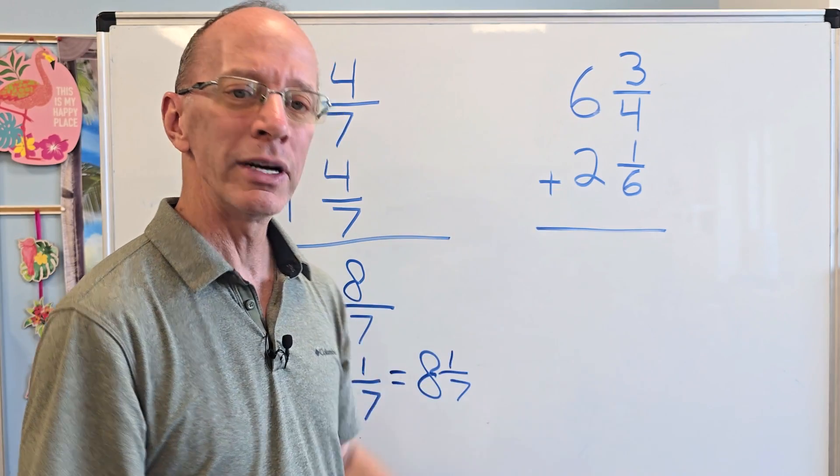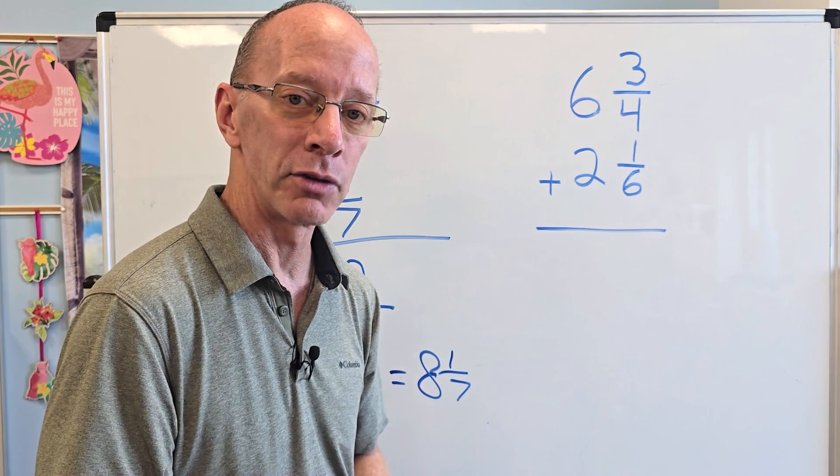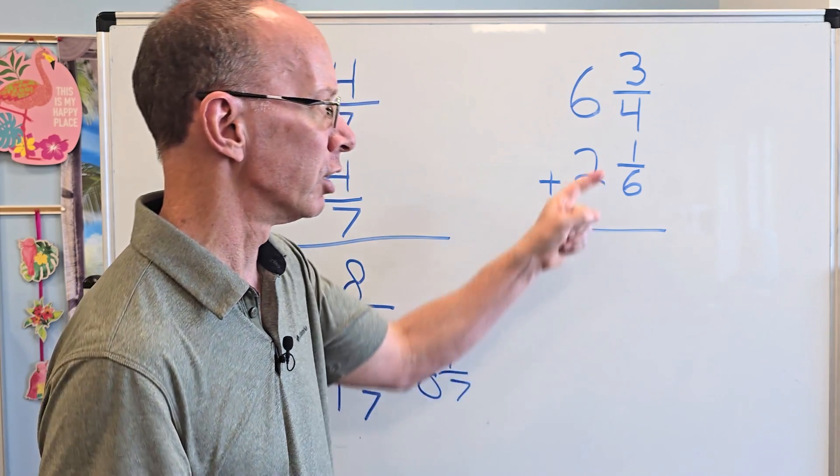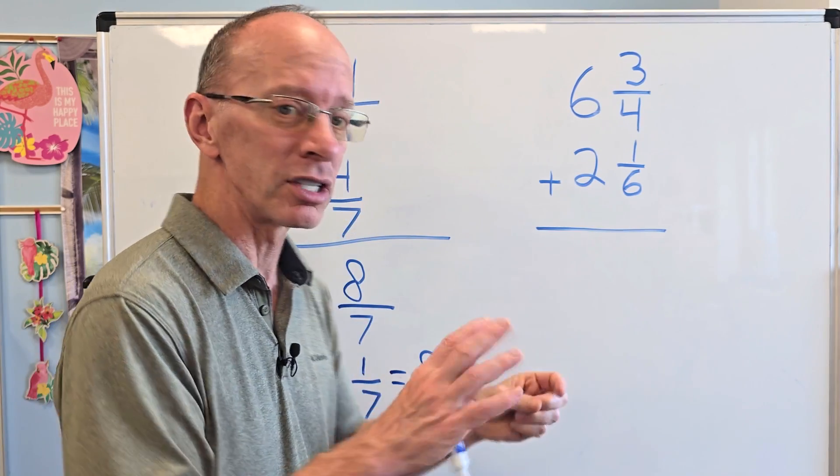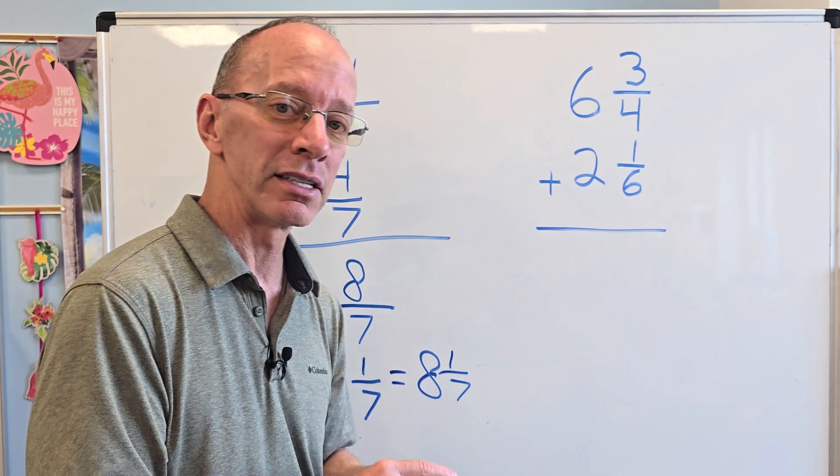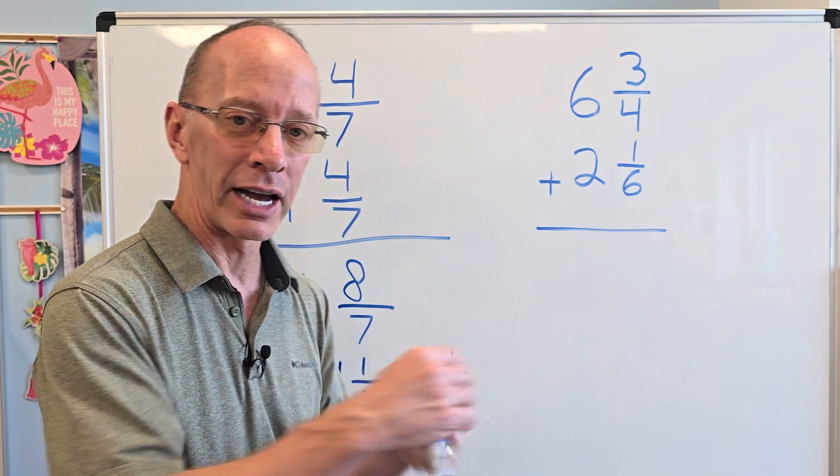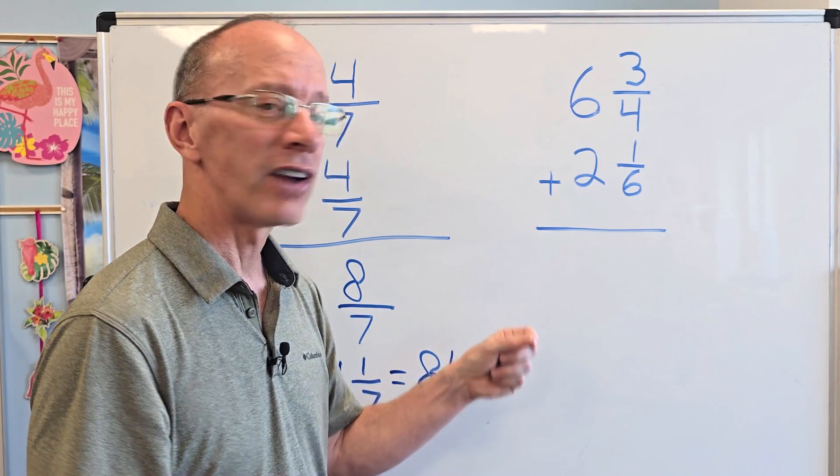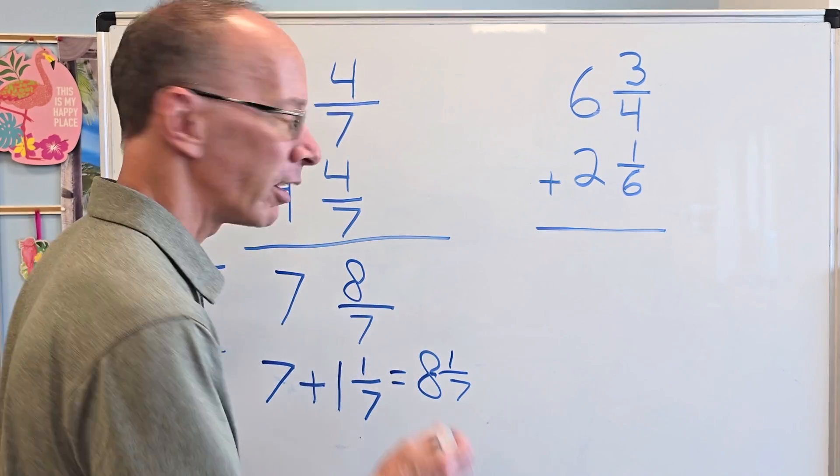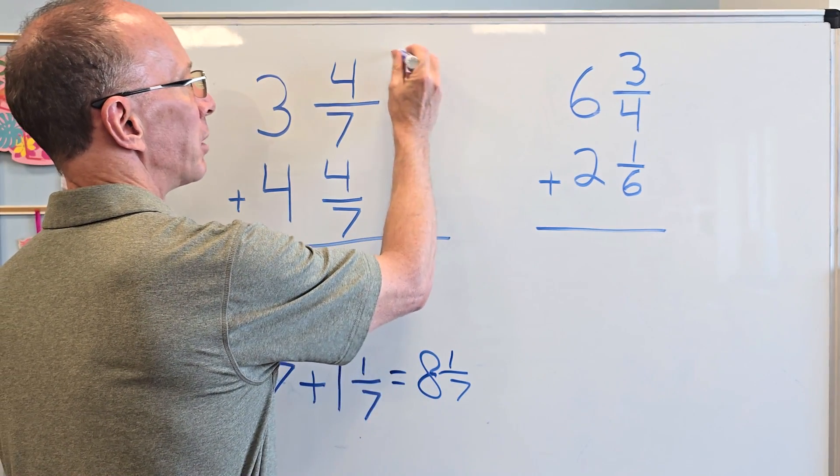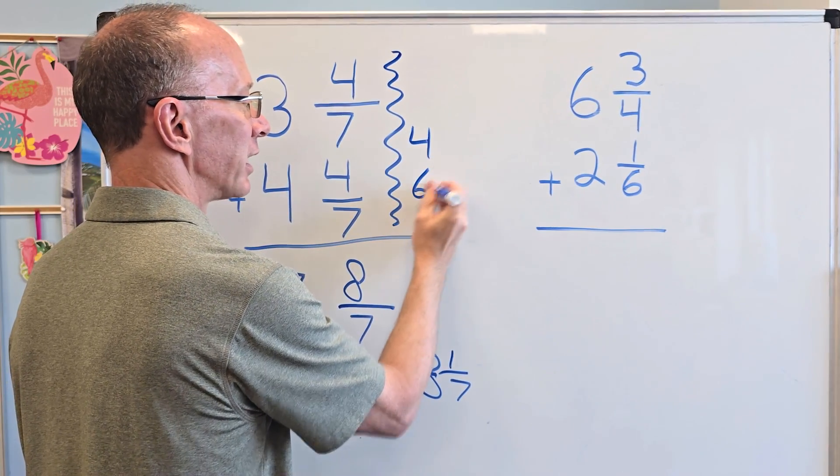6 and 3 fourths plus 2 and 1 sixth. Right away, what do you notice? Take a look at the denominators. Remember what the denominators are? The denominators are the ones on the bottom. Those are mixed. Those are just different numbers. We need to make them the same. So remember, when you're adding fractions, we need to find the least common denominator of 4 and 6. If you don't remember that, let me just do a little refreshing.